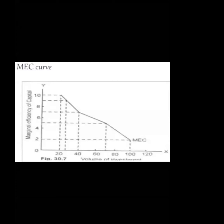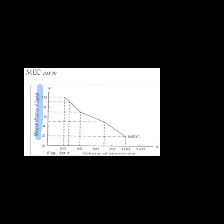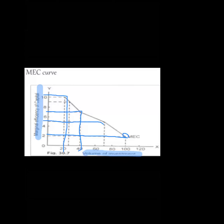The MEC curve is negatively sloped. On the y-axis we have the marginal efficiency of capital, and on the x-axis we have the volume of investment. For example, at 60–70 billion investment, MEC is 2%; at 40 billion it is 5%; at 20 billion it is around 10%. As the volume of investment increases, the marginal efficiency of capital decreases. This was the overview of marginal efficiency of capital.